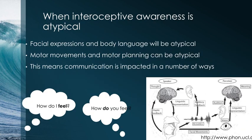If your interoception is atypical, you will have struggled with that previous activity. Some interesting aspects around atypical interoceptive awareness are that not only does the person not connect to internal body sensations signalling their feelings and emotions, but they will also have facial expressions and body language that don't match how they would be feeling. For example, if I am given very sad news, I may not have a face that expresses sadness — because I don't actually know that I'm sad.